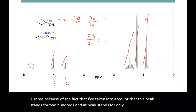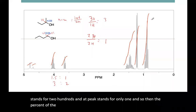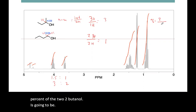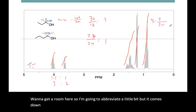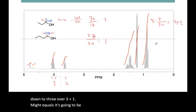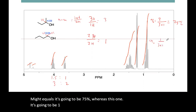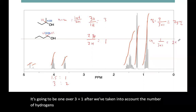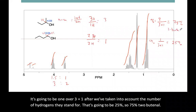So the percent of the two-butanol is going to be three over three plus one, which equals 75%, whereas the one-butanol is going to be one over three plus one — after we've taken into account the number of hydrogens each peak stands for — and that's going to be 25%. So 75% two-butanol and 25% one-butanol.